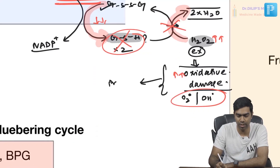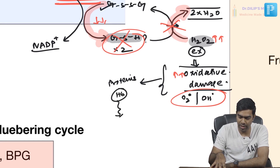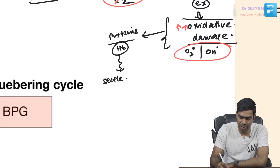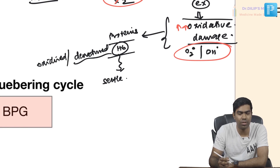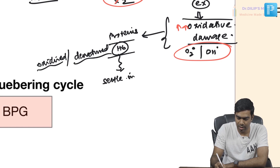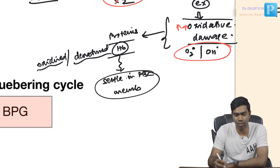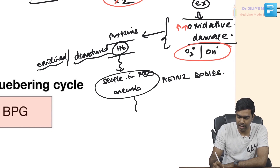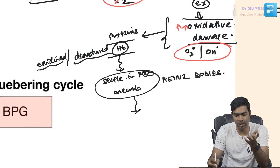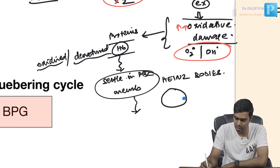This oxidative damage primarily damages hemoglobin. The damaged, oxidized, or denatured hemoglobin settles and precipitates on the RBC membrane. This precipitation of damaged hemoglobin on the RBC membrane is what we call Heinz bodies.